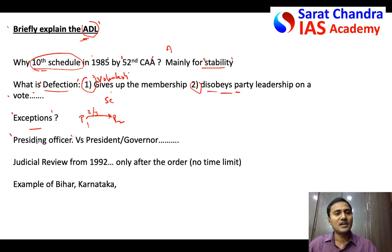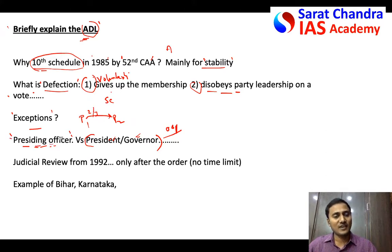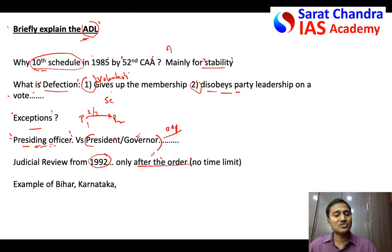The decision on disqualification is taken by the presiding officer — the Speaker in the Lok Sabha and in state assemblies, and the Chairman in the Rajya Sabha. This is different from disqualification by the President or Governor, which applies for things like holding an office of profit based on the Election Commission's recommendation. As for the presiding officer's decision, in 1992 the Supreme Court held that it is subject to judicial review, but only after the presiding officer has first made a decision.